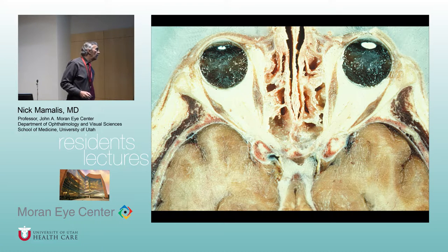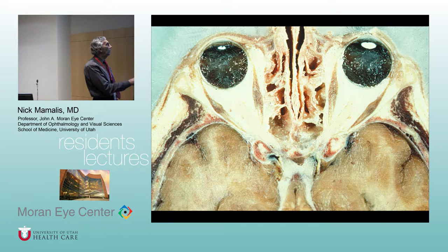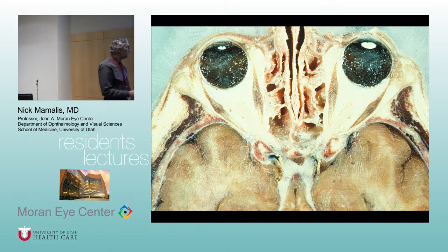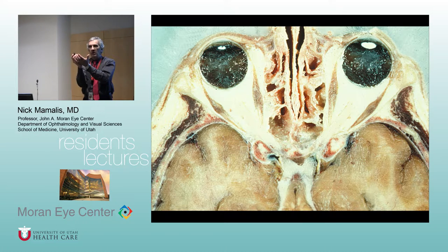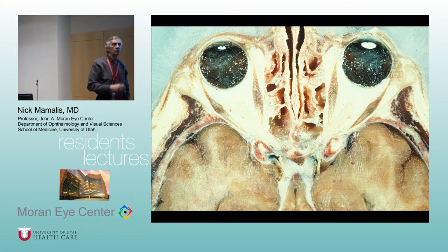We're going to talk about the orbit today. Chris, tell us how we divide the orbit into its main areas. We've got this cadaver in kind of an MRI view. The main divisions are intraconal and extraconal. What's inside the rectus muscles is intraconal. The muscles come back to the apex and form a column.